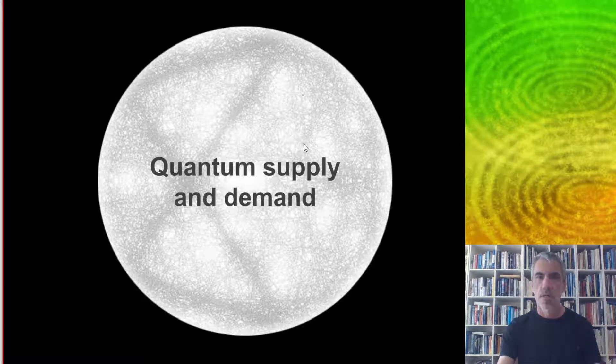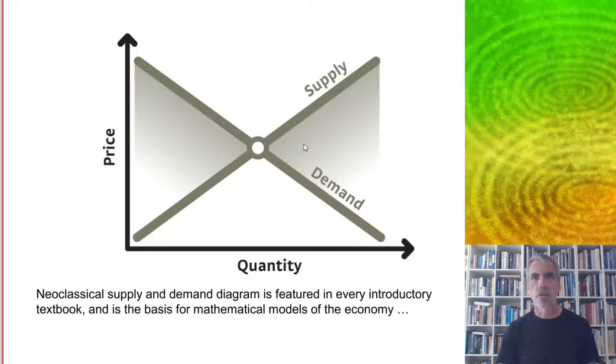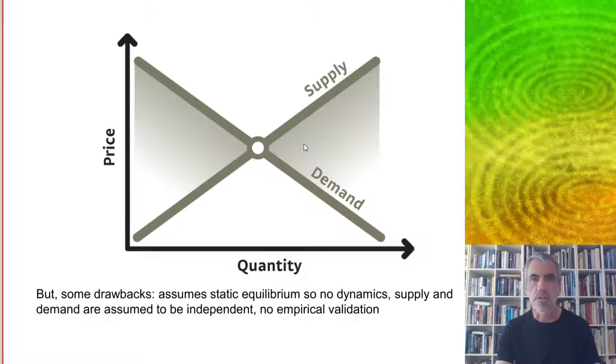Today we're going to be talking about a quantum model of supply and demand. Perhaps the best known result from neoclassical economics is the supply and demand diagram, which is featured in every introductory textbook. It's a basis for mathematical models of the economy and it's shaped the way that we go about economics.